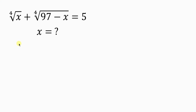Welcome back to my YouTube channel where we have this question on the board: find the value of x for which the fourth root of x plus the fourth root of 97 minus x is equal to 5.